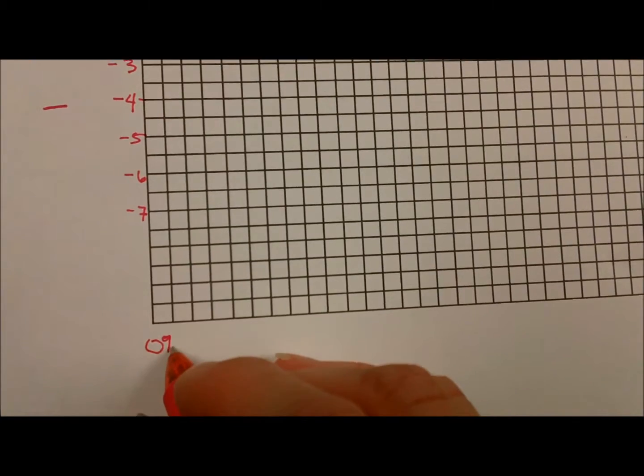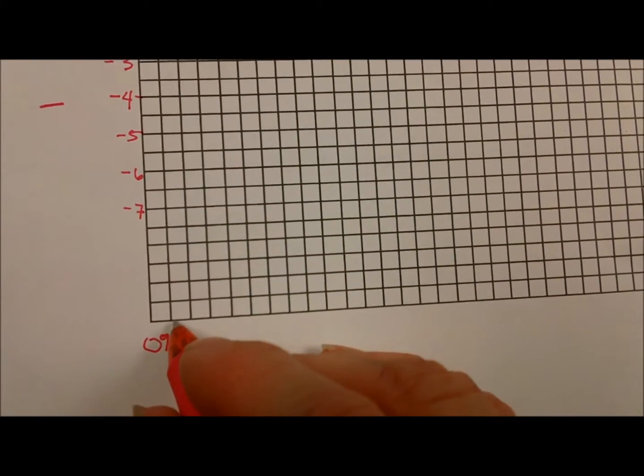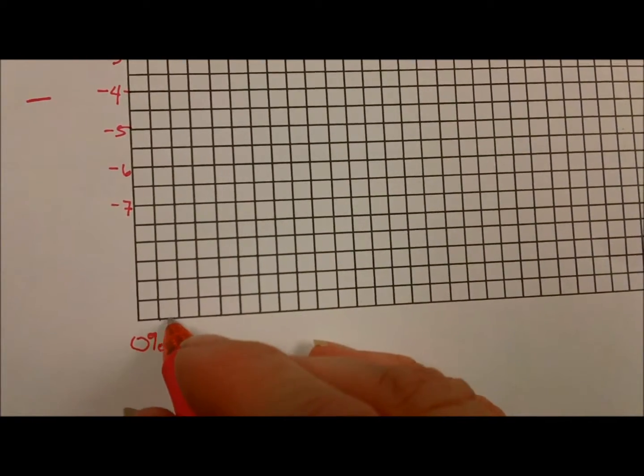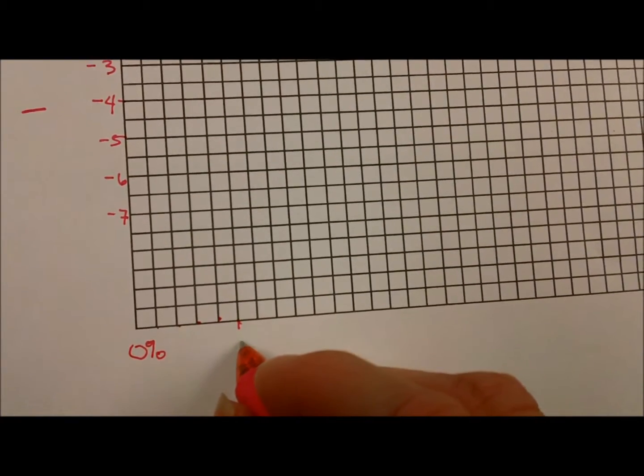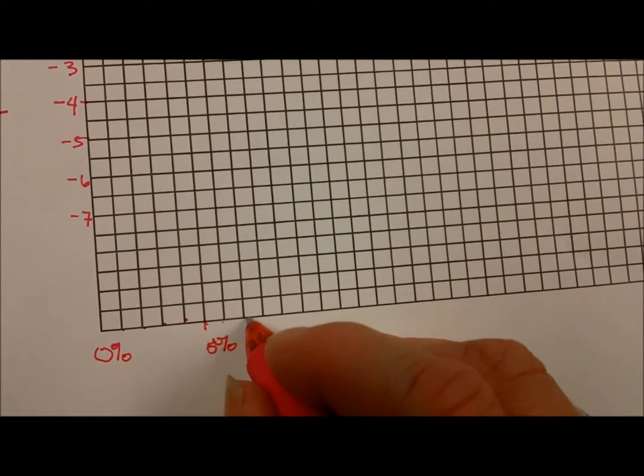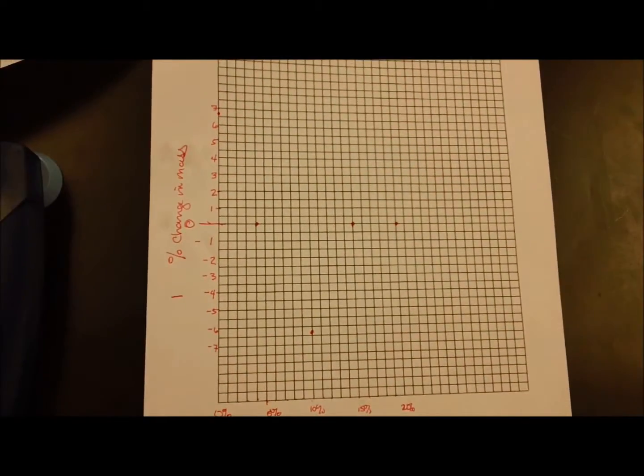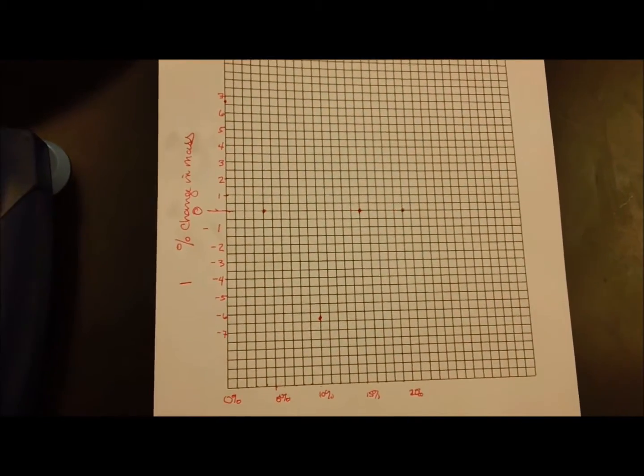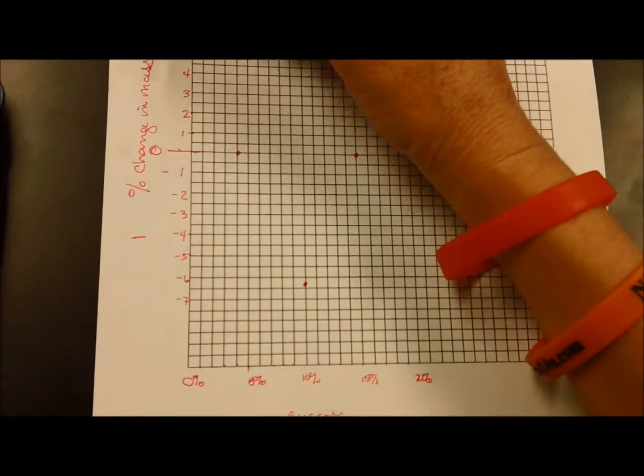At the bottom we will have our various percentages. So 0% sucrose here, and then we'll have an appropriate scale: 1, 2, 3, 4, 5% sucrose here. Once I have all my dots graphed, now I can connect them with a line of best fit.